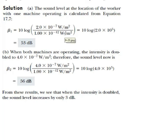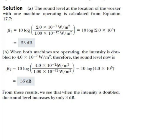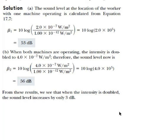When both machines are operating, the total intensity doubles to 4×10⁻⁷ W/m². The sound level is then beta = 10·log(4×10⁻⁷ / 10⁻¹²), which comes out to be 56 decibels. From this result, we see that if the intensity doubles, the sound level increases by 3 decibels.